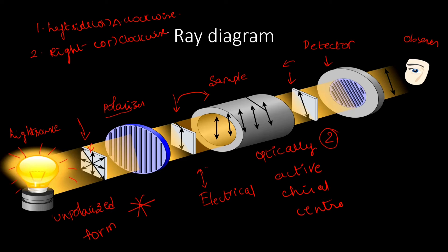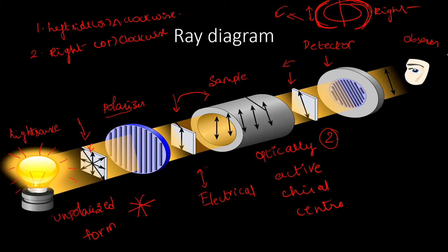So here we have two results. First, the sample turns the plane polarized light anti-clockwise. For example, if our particular sample is a left-side rotating compound, it turns the plane polarized light to the left side.